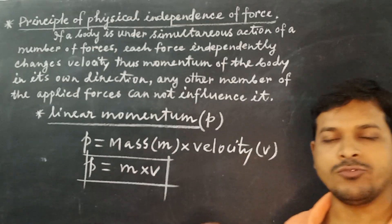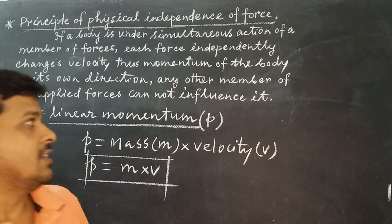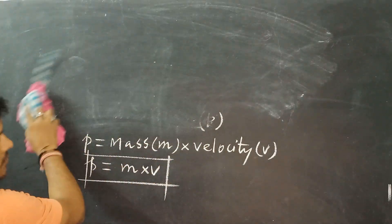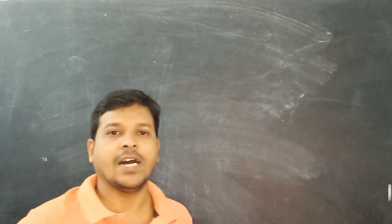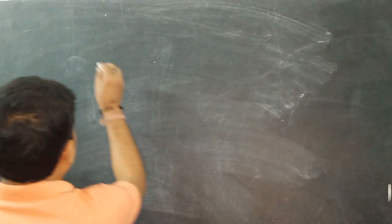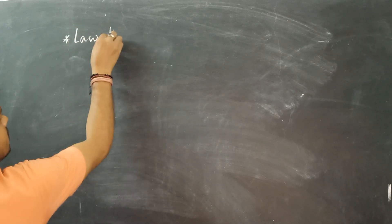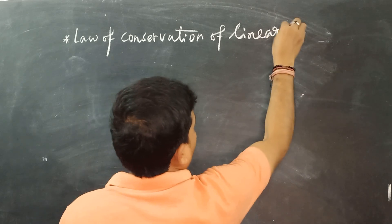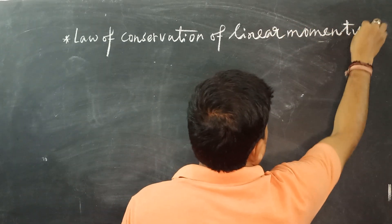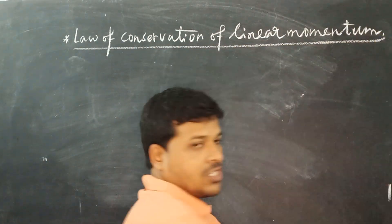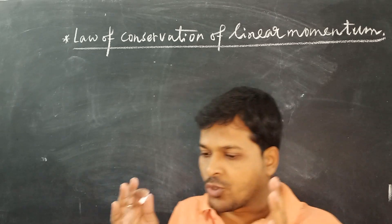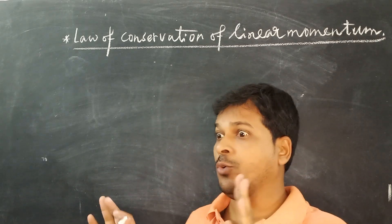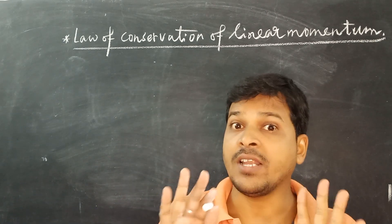There is a particular law related to linear momentum — the law of conservation of linear momentum. This law states that the total linear momentum before collision and after collision of two bodies always remains conserved, if no external force acts on them except their mutual interaction.